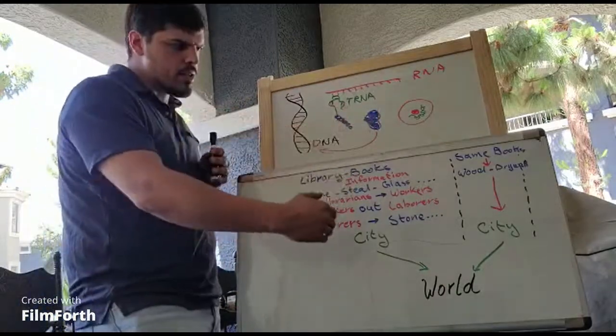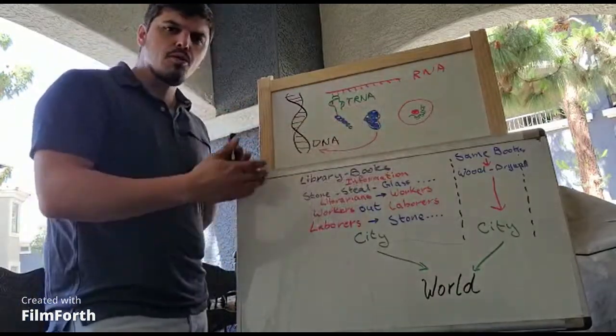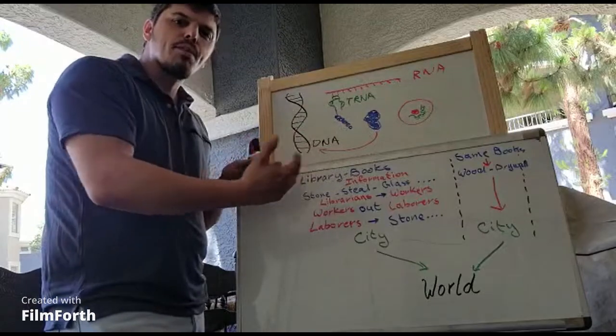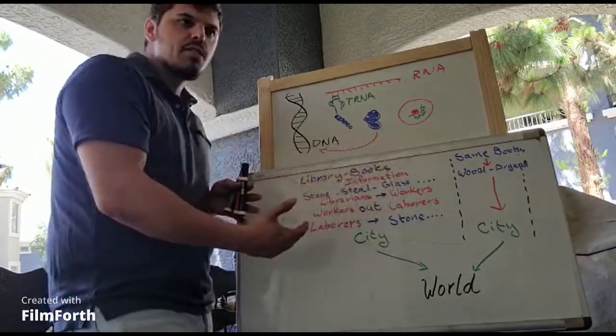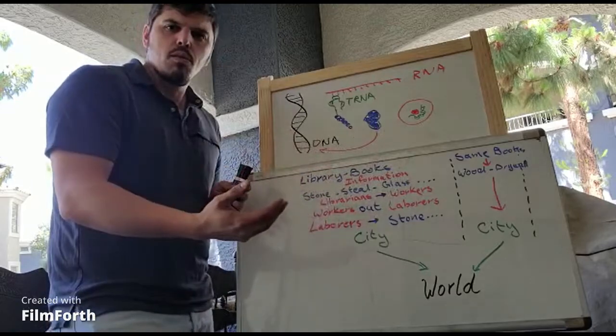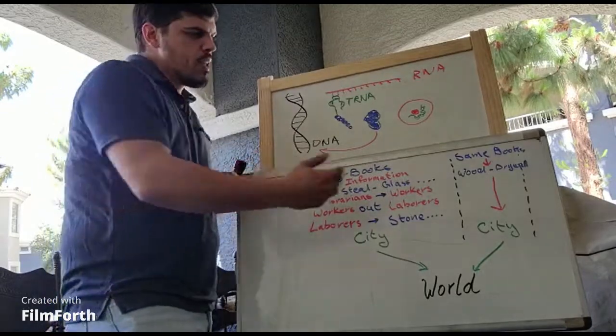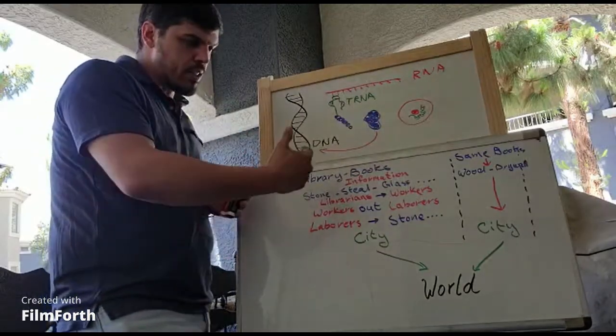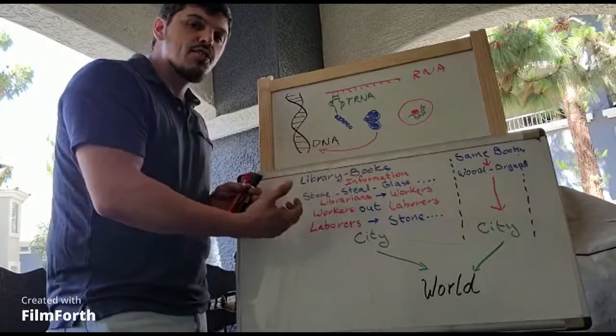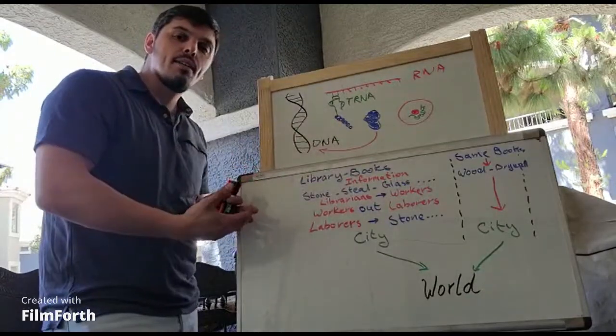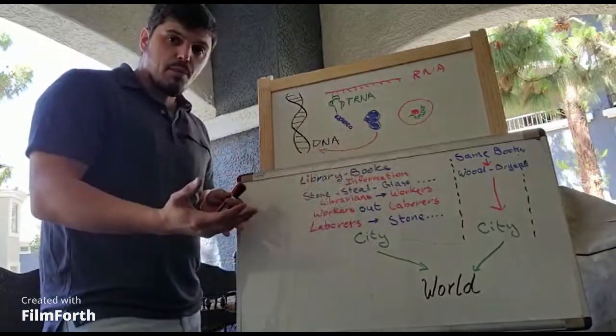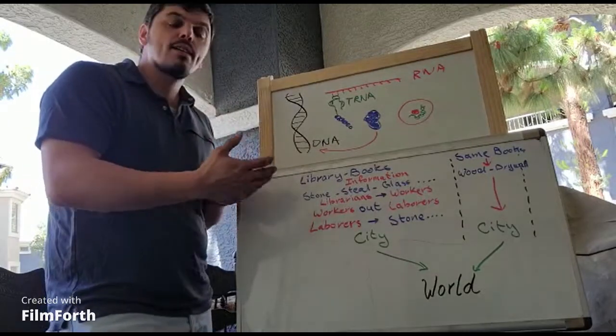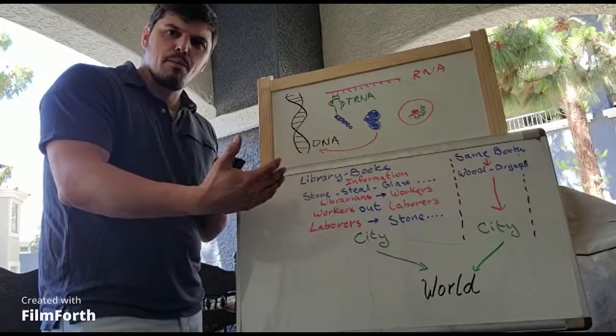Now, not so far away, there's another library with the same books, same information, but the librarians are taking different books and copying them. They're making copies out of different information, and that information is how to make wood and drywall and a whole different type of construction. Now, again, those librarians are taking that information, they're giving it to workers. Those workers take that information, and they transport it outside the library, and then they give it to the laborers, and the laborers make wood, they make drywall, and so on, and then they end up building a different city, but right next to it, another neighboring city.